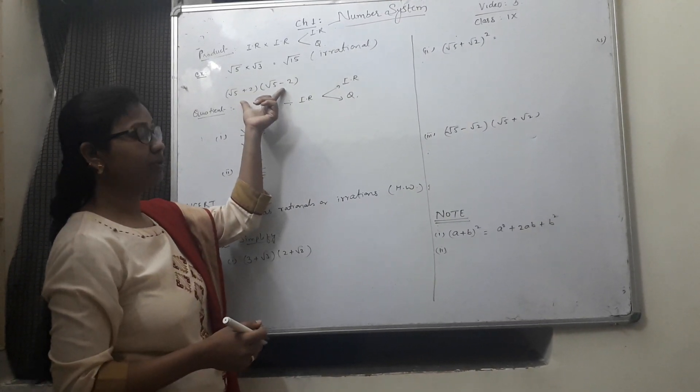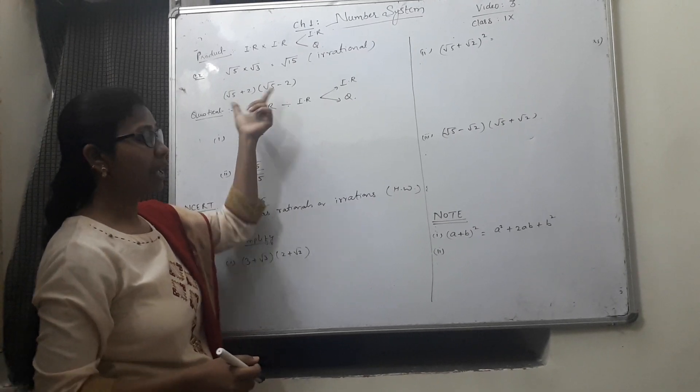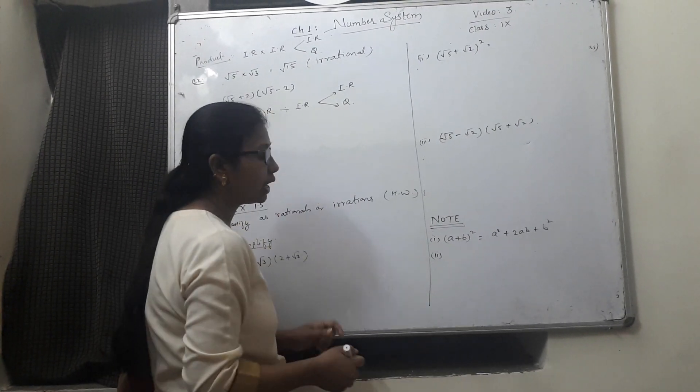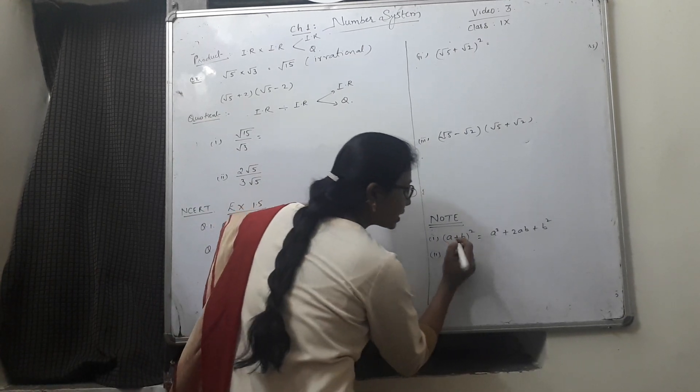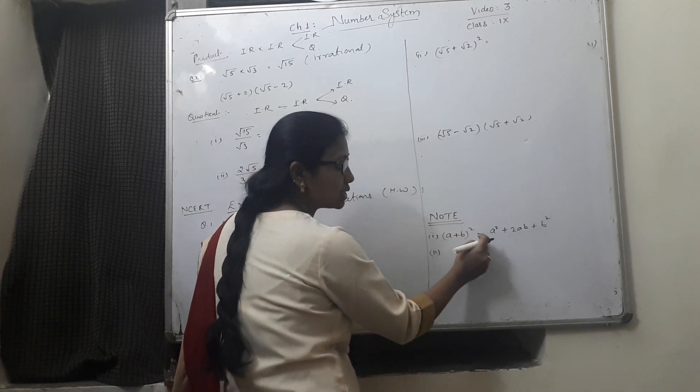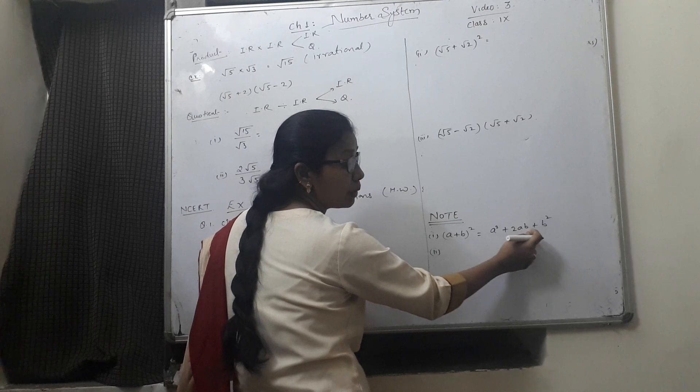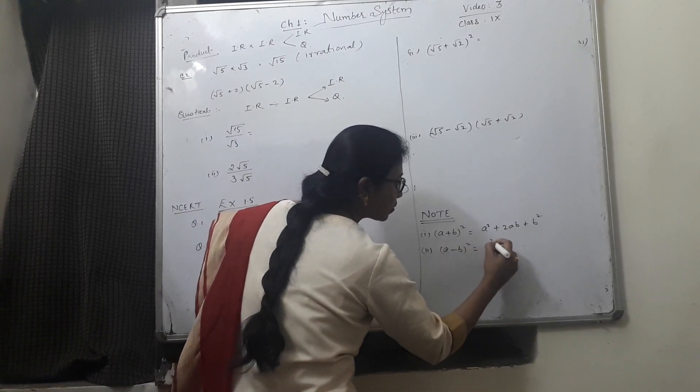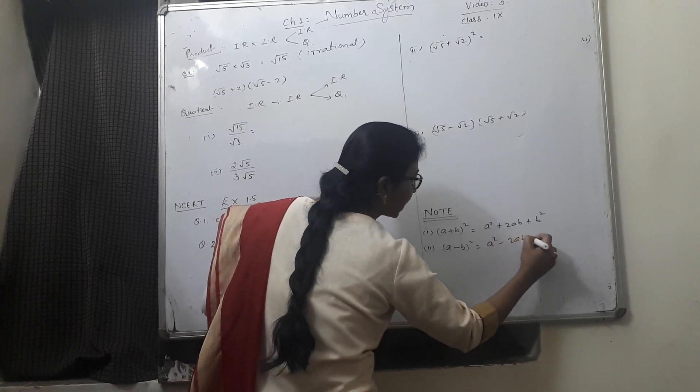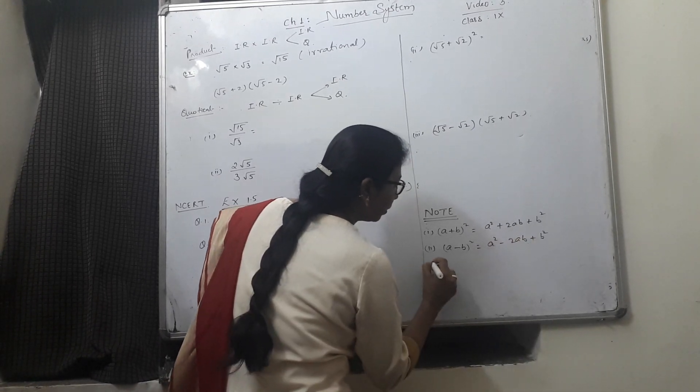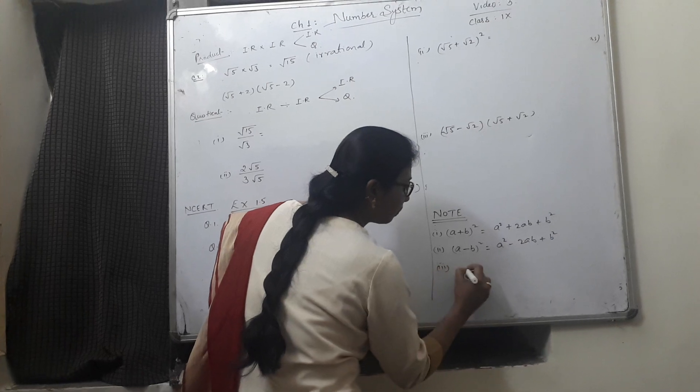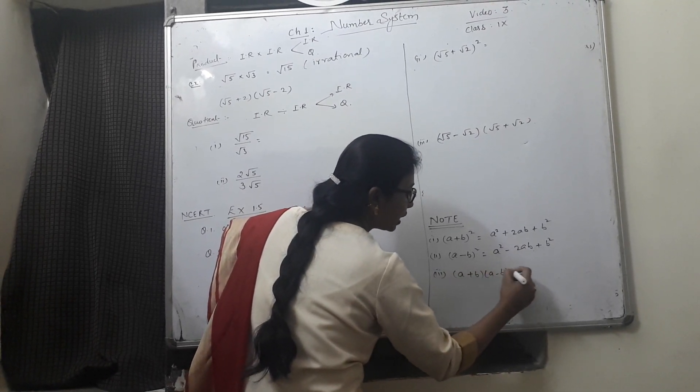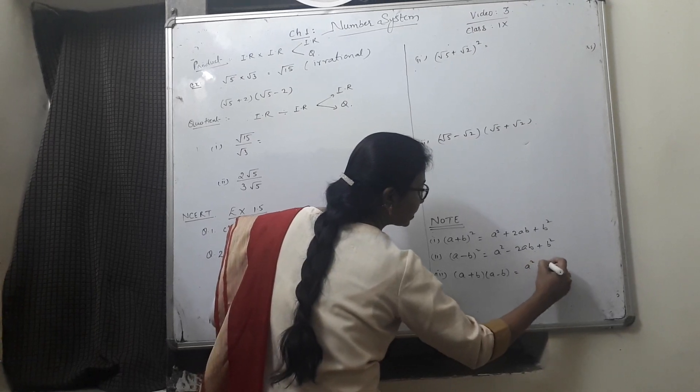This type of values we can multiply by using identities which you have already read in your class 8. These are a plus b whole square equals a square plus 2ab plus b square. a minus b whole square is a square minus 2ab plus b square. And very much important identity is a plus b, a minus b gives you a square minus b square.